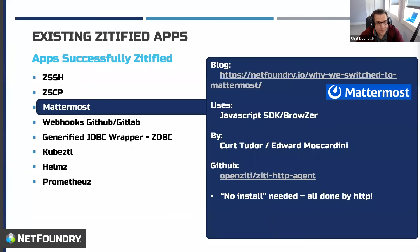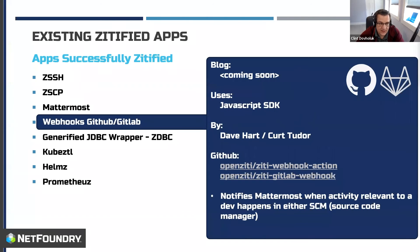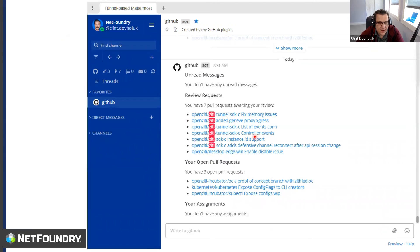At NetFoundry we use Mattermost — a chat app exactly like Slack but totally protected on a Ziti network. Part of being a developer is getting notifications when people push commits, so we needed GitHub and GitLab webhooks. In the Test Kitchen you'll find those webhooks configured so that servers out in the cloud — GitHub and GitLab — can actually send messages directly into my Mattermost instance.